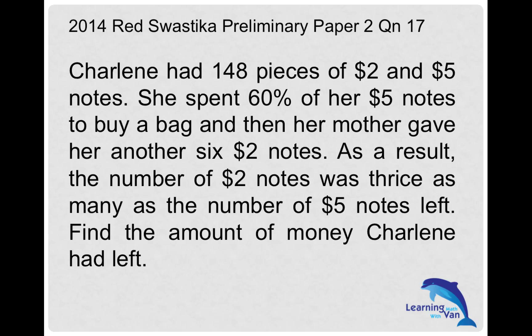Charlene had 148 pieces of $2 and $5 notes. She spent 60% of her $5 notes to buy a bag, and then her mother gave her another six $2 notes. As a result, the number of $2 notes was twice as many as the number of $5 notes left. Find the amount of money Charlene had left.